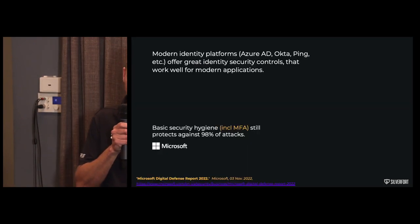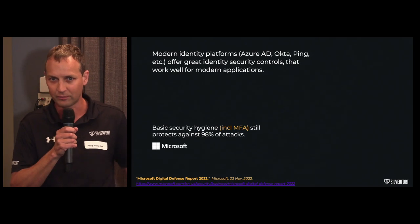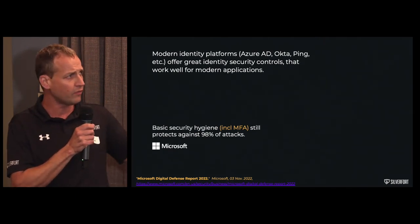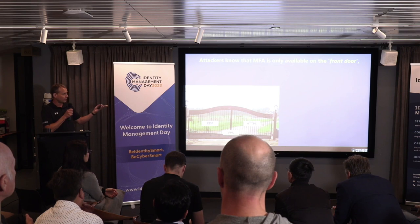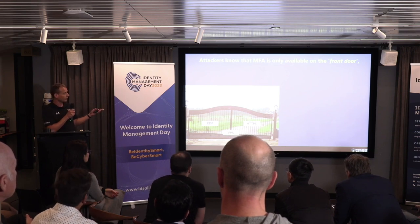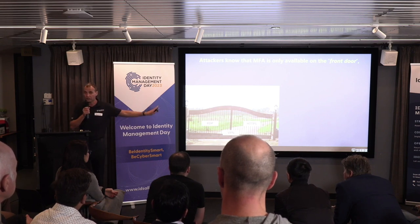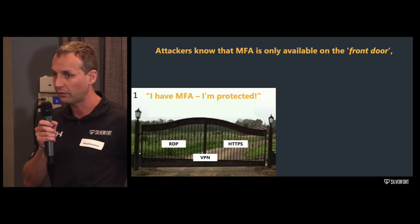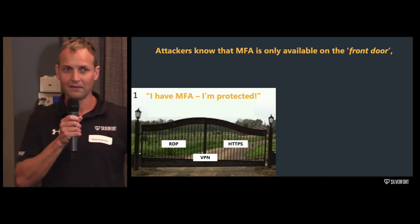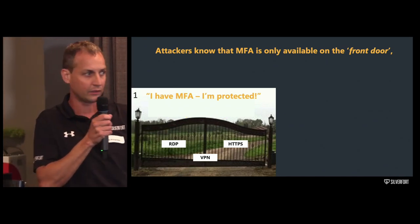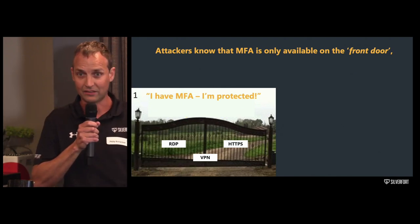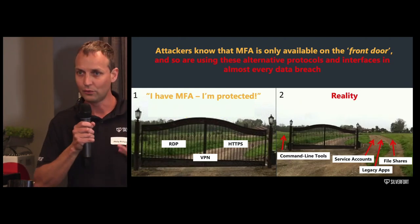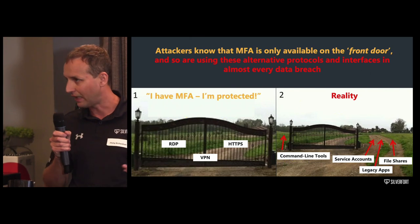Legacy protocols used by ransomware — file shares that people connect to. You double-click on the G drive, you get access. Ransomware does the same: connects, scans, encrypts the files, holds you to ransom. We've got all these environments stuck with legacy authentication where we can't bring modern security controls. Attackers know you've got MFA on the front door — your modern SaaS web app, RDP, VPN — but they're going around that. They're using command line tools, PowerShell, service accounts. You can't even MFA a service account.